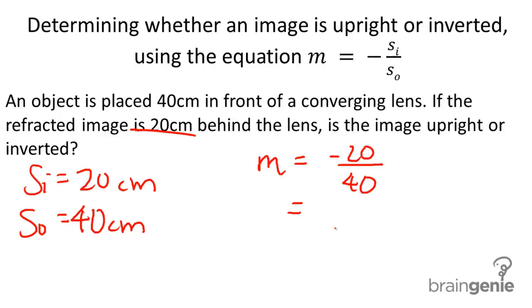Now, since this is negative, negative indicates an inverted image. Okay, if M is positive, then it would be upright. However, it's negative, therefore it is inverted.